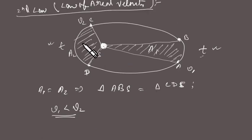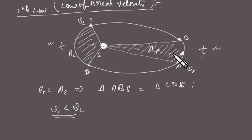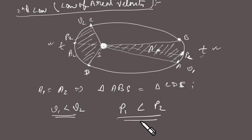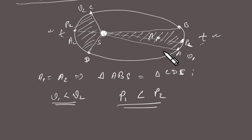The farthest point from the Sun and the nearest point can be identified by joining the two foci with a line and extending it. Let's call the farthest point P1 and the nearest point P2. Then the velocity at P1 is less than the velocity at P2. In fact, the velocity at P2 is the maximum velocity and the velocity at P1 is the minimum velocity of the planet.